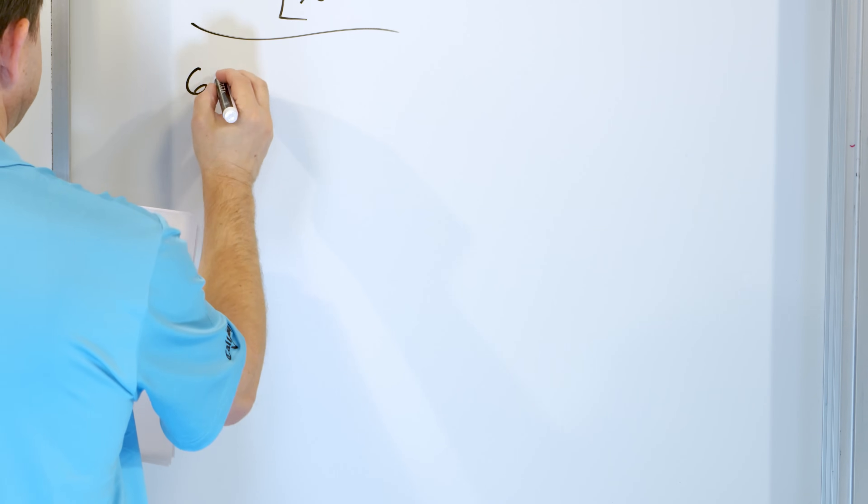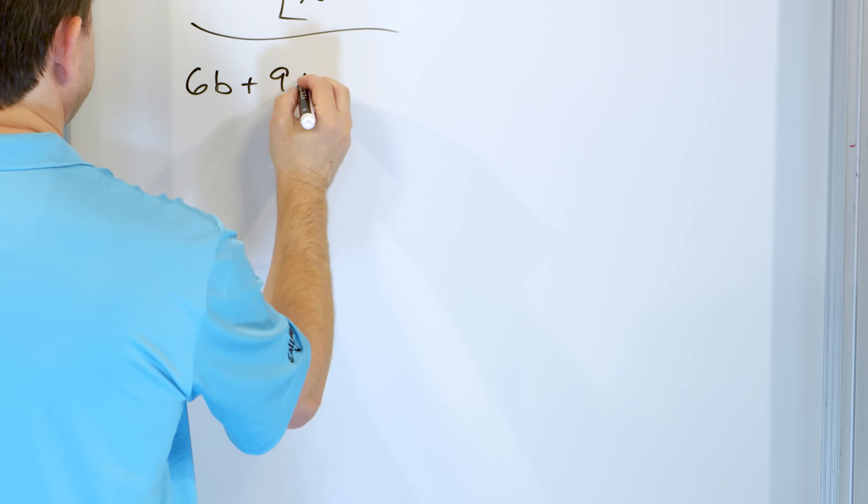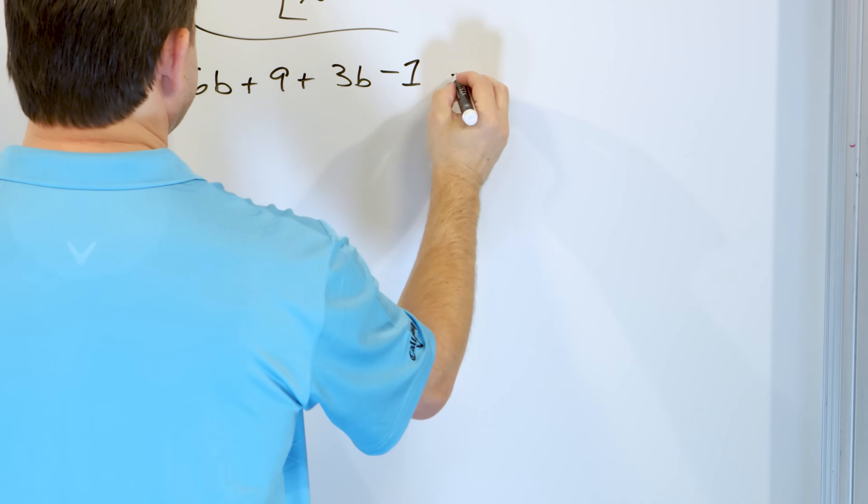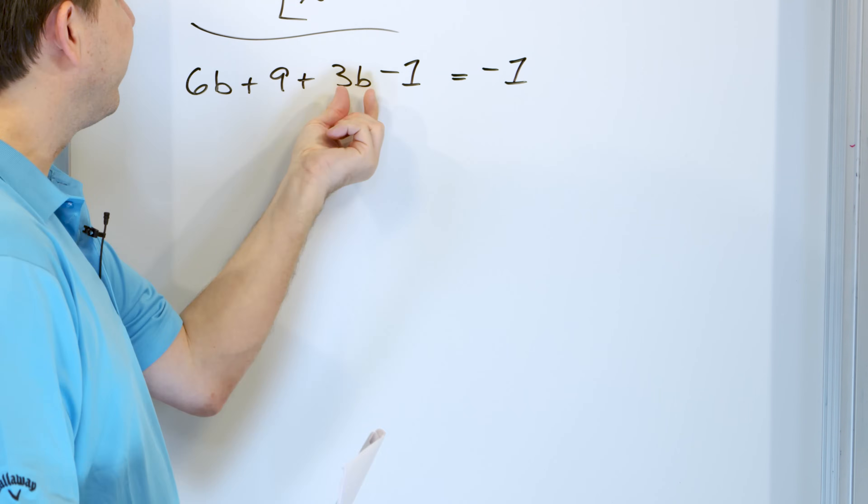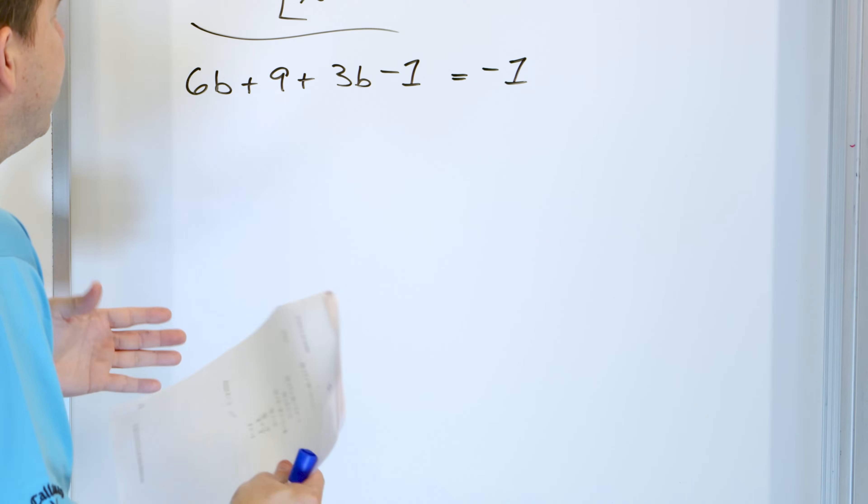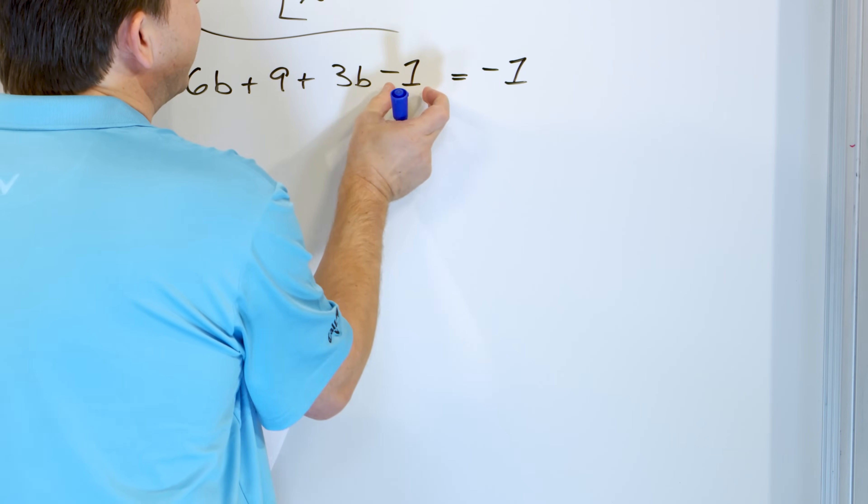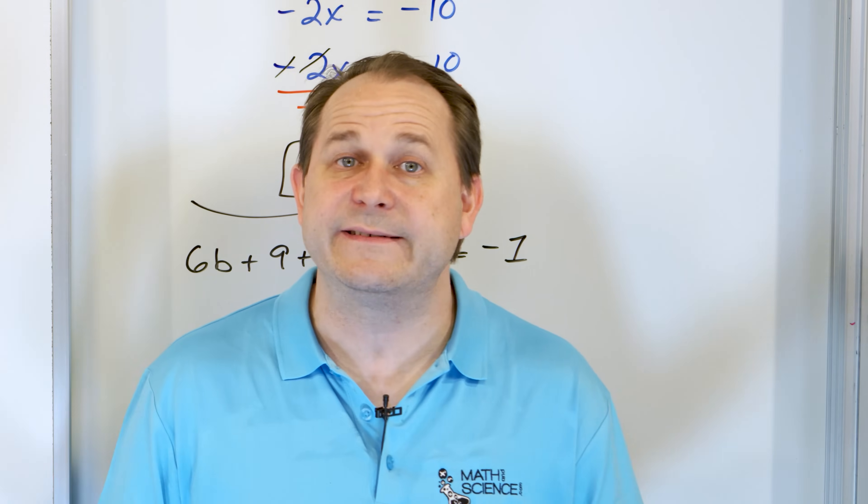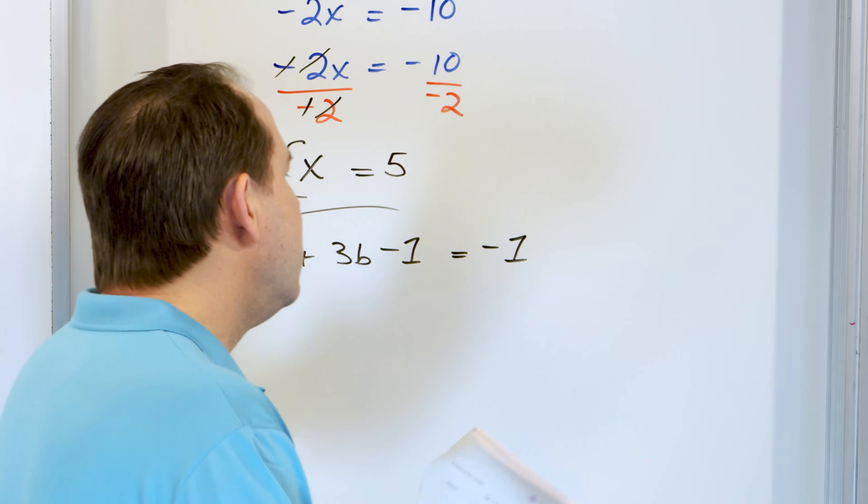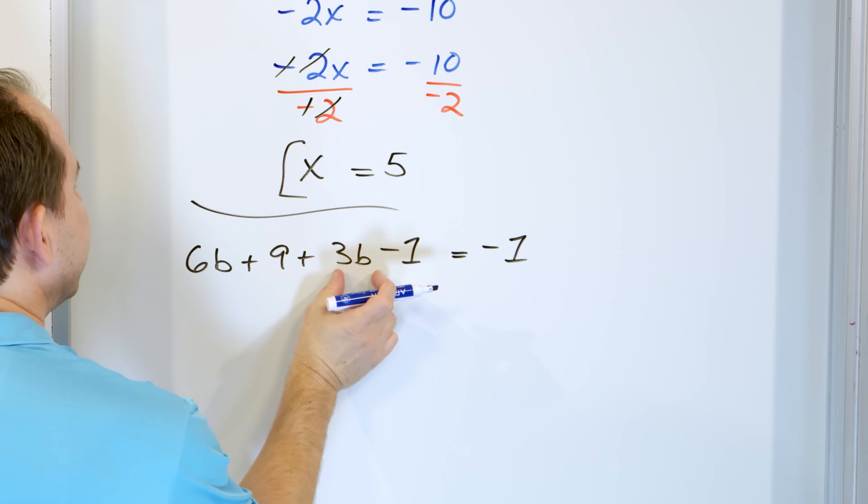Here's our very last problem. We have 6 times b plus 9 plus 3 times b minus 1, and we'll get an answer of negative 1. Now, we notice immediately we actually have like terms. We have the b terms are like, and we also have the numbers that are like. So if I wanted to, I could, for instance, add 1 to both sides and get rid of this, but then I would have to get rid of the 9 by subtracting 9 from both. I would have a lot of extra steps. It makes sense to combine everything you can first, so we're going to simplify the left-hand side. The 3b and the 6b is 9b. The 9 minus 1 is actually positive 8, and then we have this guy, and we know how to do this. We're going to get rid of this 8 first.